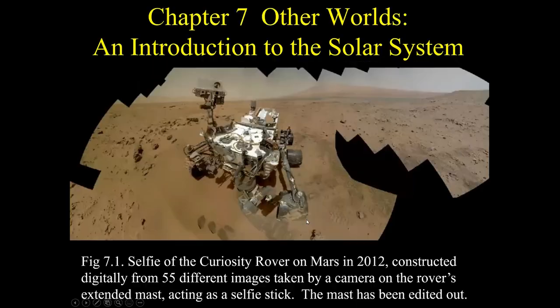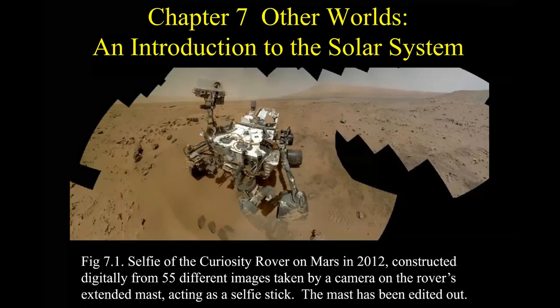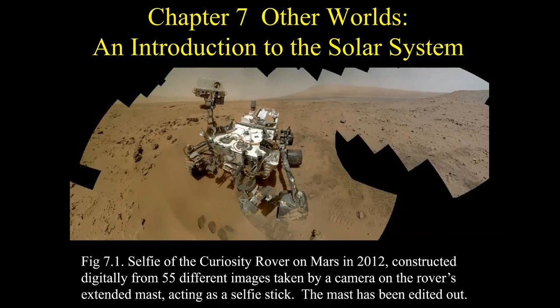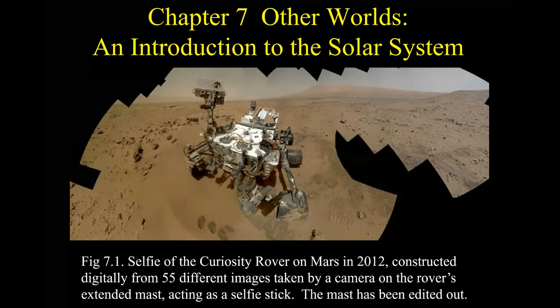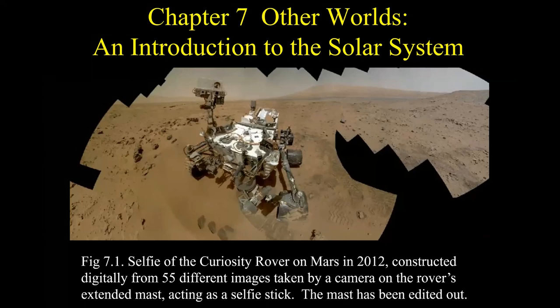All right. Well, that's it for Chapter 6. In Chapter 7, we're going to give you that brief overview of our own solar system. And we're going to be talking about the planets and their moons in Chapters 8 and 9 and 10. So this is just a quick survey of what there is in the solar system.